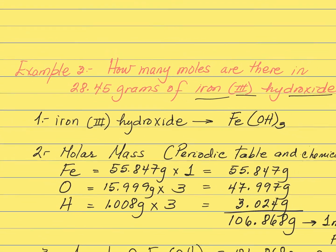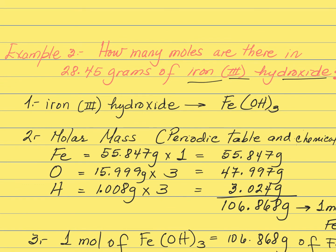The last example for today: how many moles are there in 28.45 grams of iron(III) hydroxide? Now you're not asking for grams — you're asking for moles, and you're given the grams. You know how to set that up. I have grams and they want moles. For the molar mass, I need to analyze: do I have an element or a compound? Iron(III) hydroxide — by looking at the name you already know it's a compound, because elements don't have two-word names.